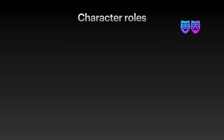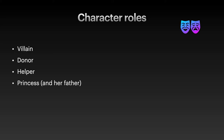Propp lists seven character roles. Villain, who struggles against a hero. Donor, who prepares the hero or gives the hero some magical object. Helper, who helps the hero in a quest. Princess, and possibly her father, who gives the tasks to the hero and is often sought for during the narrative. Dispatcher, who makes the lack known and sends the hero off. Hero, who departs on search, meets the donor and returns home. False hero, who takes credit for the hero's actions.